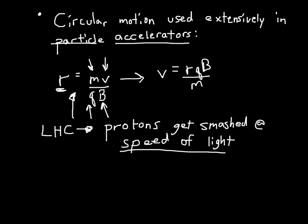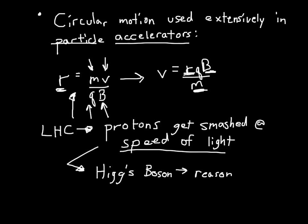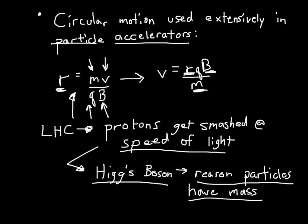The purpose of smashing protons together at the speed of light was to find something called the Higgs boson. The Higgs boson is the reason things have mass. To understand why mass exists, we have to find this Higgs boson. It's a fundamental question in physics, and it was just solved recently — we have found the Higgs boson and now know why particles have mass, which will help us explore new science questions.